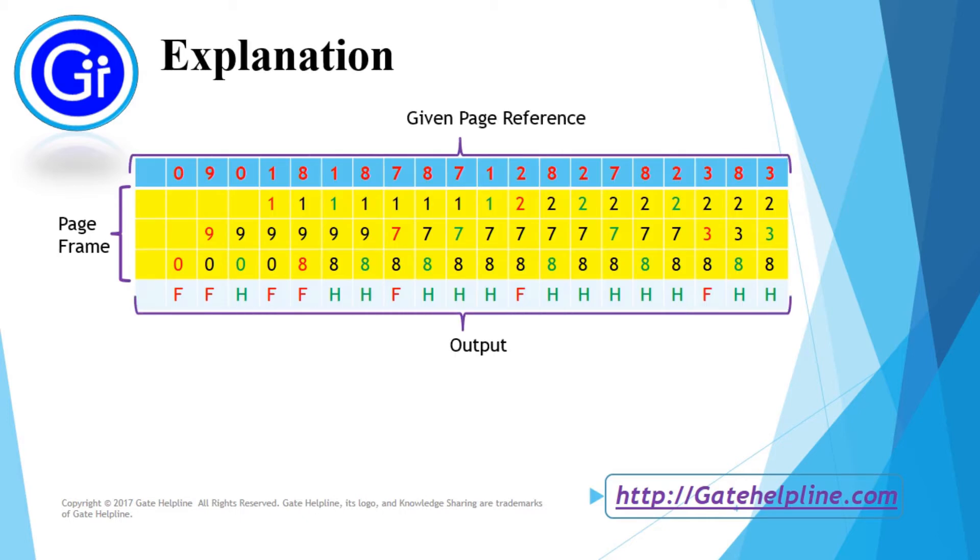So now we will see explanation of the question. In the question, given page references is this and available page frames are 3. So memory is divided into page frame of 3. Initially all the 3 frames are empty.